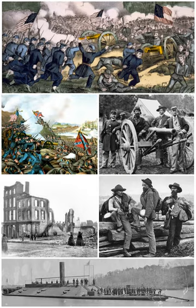On May 3, 1861, Lincoln called for an additional 42,000 volunteers for a period of three years. Four states in the Middle and Upper South had repeatedly rejected Confederate overtures, but now Virginia, Tennessee, Arkansas, and North Carolina refused to send forces against their neighbors, declared their secession, and joined the Confederacy. To reward Virginia, the Confederate capital was moved to Richmond.